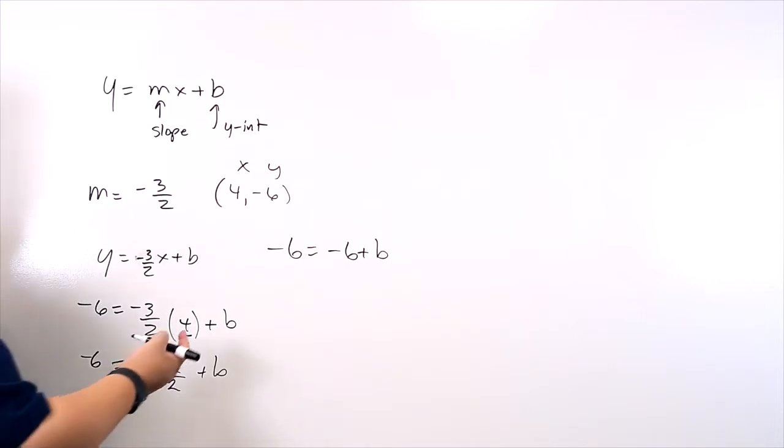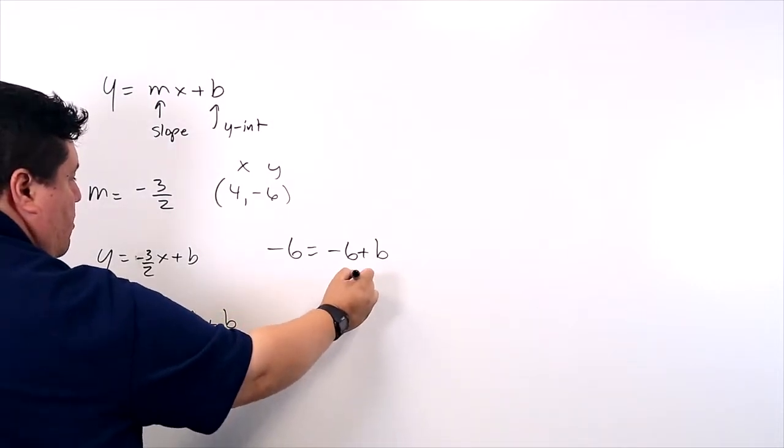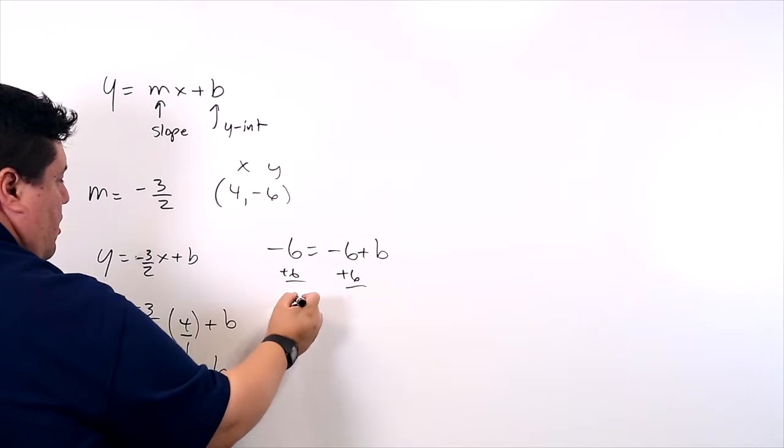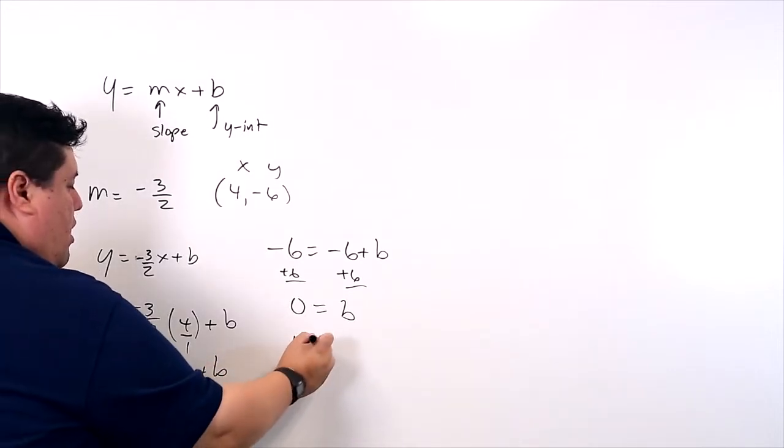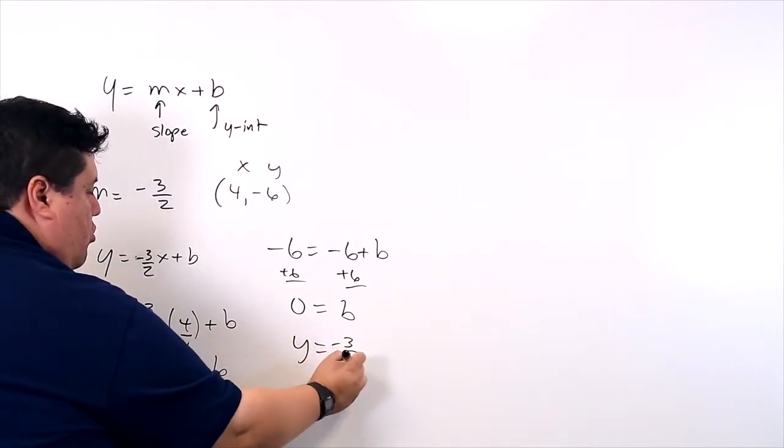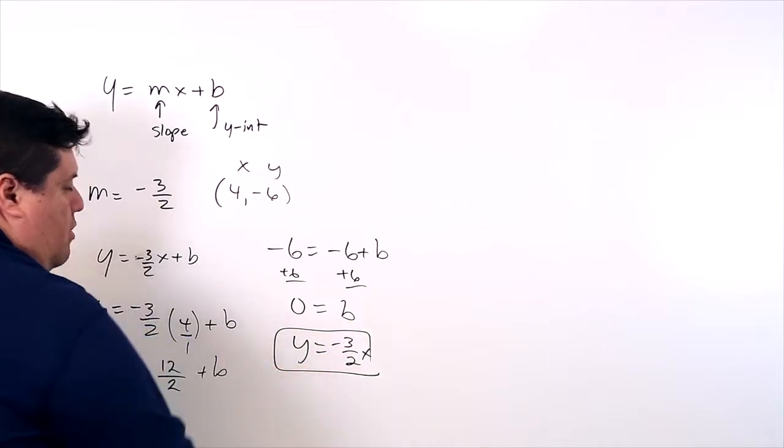And then in this case, how do we solve for b? We add 6. We add 6 and we get b is equal to 0. So it turns out that our formula is going to be y equals negative 3 over 2x. There it is.